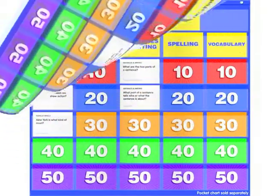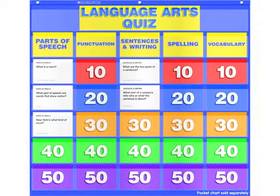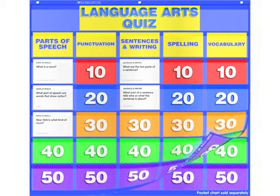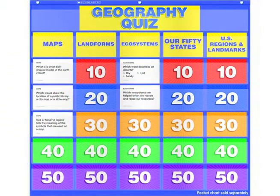Other add-ons are a language arts quiz card set, which includes parts of speech and punctuation. The geography class quiz card set is broken down into maps, ecosystems, land forms, and U.S. regions.